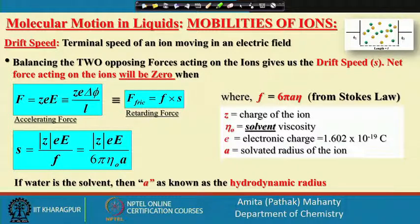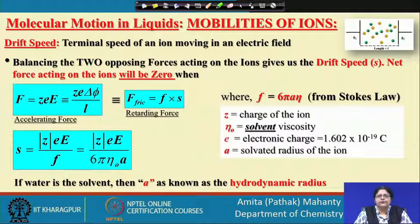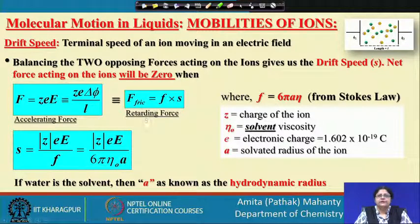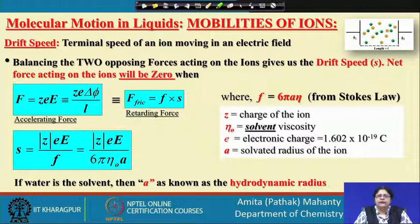When you have a small spherical particle moving in a fluid medium, they reach a terminal velocity when the buoyant force and the frictional force is balanced by the gravitational force. The same logic we are going to use. What we have here is the frictional force existing in the fluid system — this is the friction parameter and this is the speed with which it is moving, the terminal speed. When we want to acquire the terminal speed, the net force acting on the charged particle should be zero, and that will be zero when the accelerating force is equal to the retarding force.